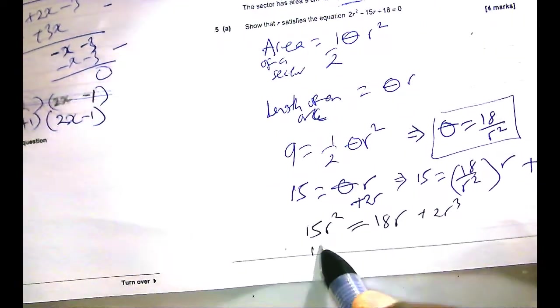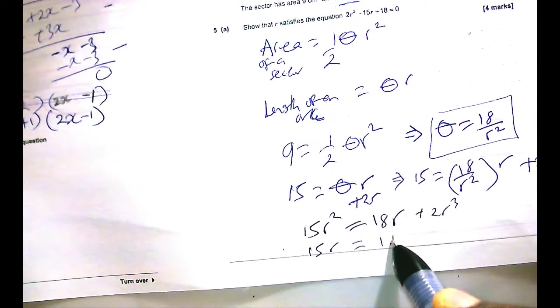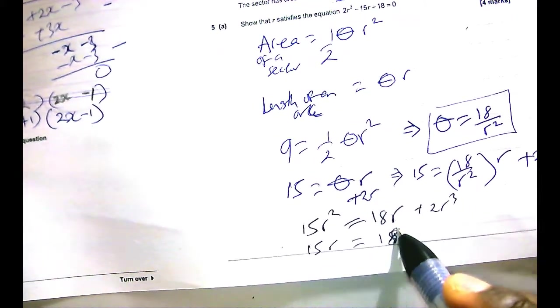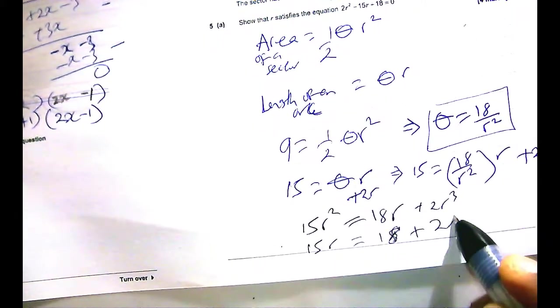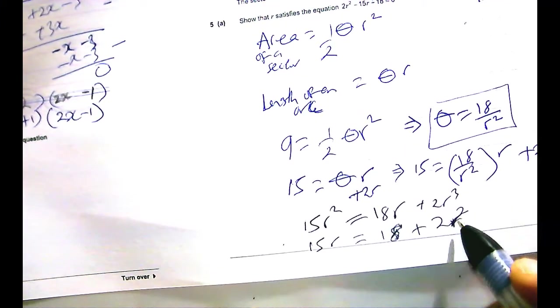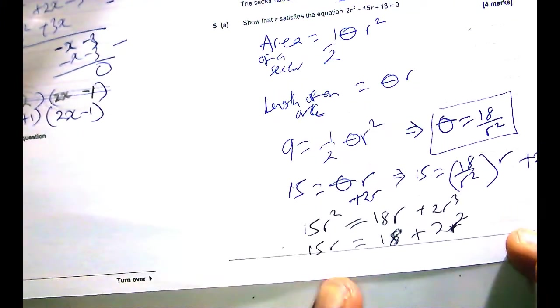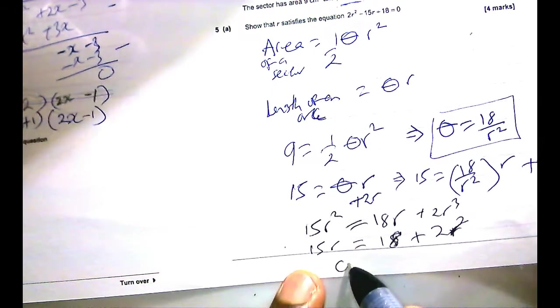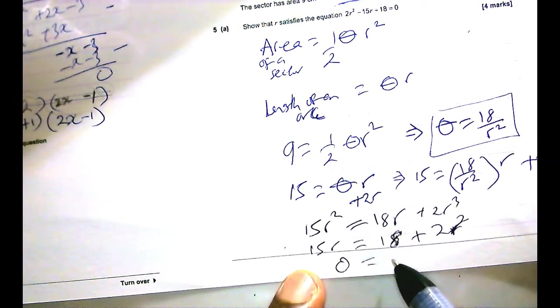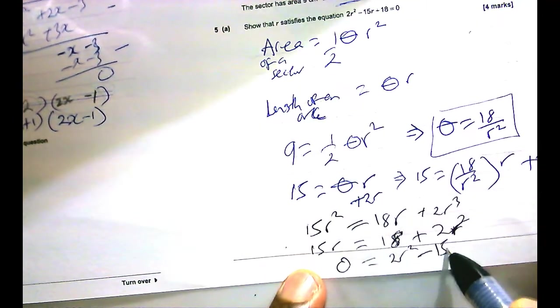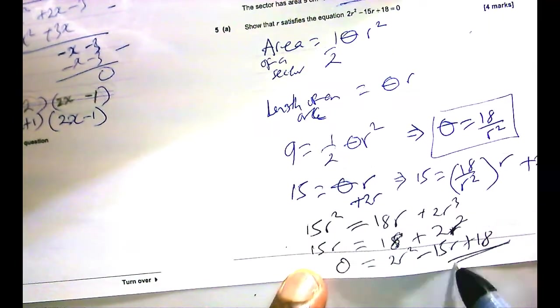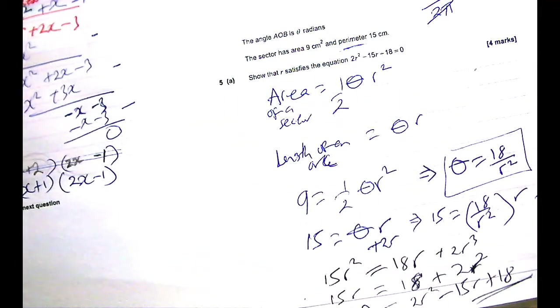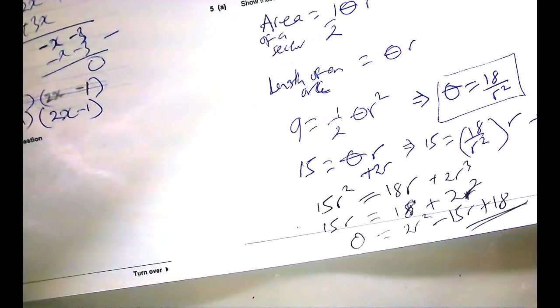And we can now just divide everything by R. So this is just 15R, and this is just 18, and that is just 2R². Of course, if you rearrange it, you can bring the 15R to the other side, and you're left with 0 on this side: 2R² - 15R + 18 as required. So that's it. That's question 5A.